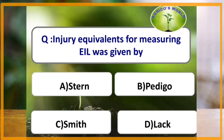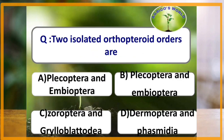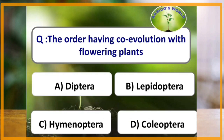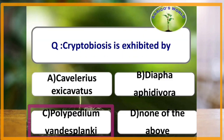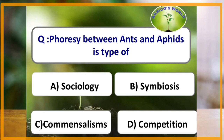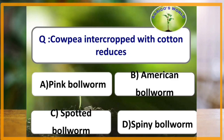Injury equivalence for measuring economic injury level was given by Pedigo. The two isolated Orthoptera orders are Plecoptera and Embioptera. The order having co-evolution with the flowering plants is Lepidoptera. Cryptobiosis is exhibited by Polypedilum vanderplanki. The diversity between ants and aphids is a type of symbiosis.